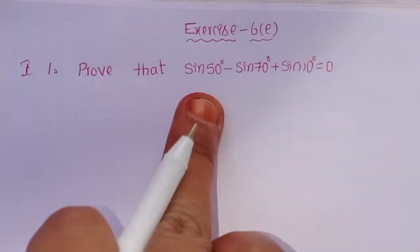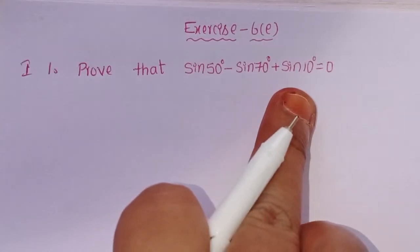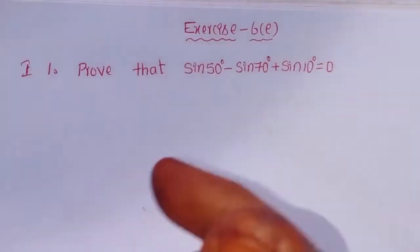First roman, first problem. Prove that sin 50 degrees minus sin 70 degrees plus sin 10 degrees equals 0.